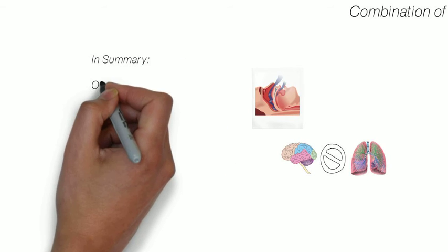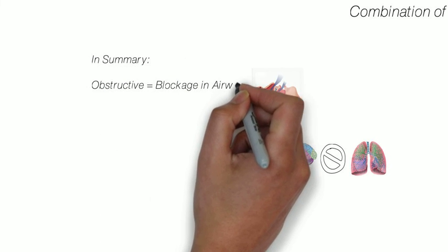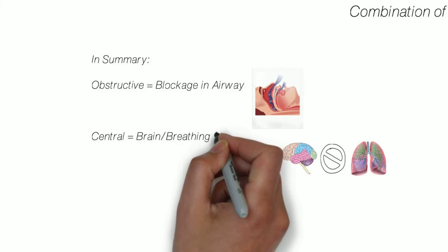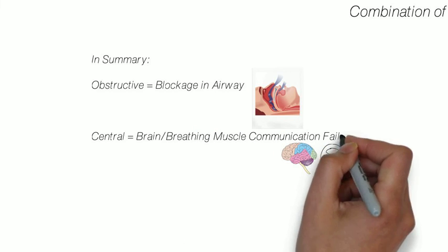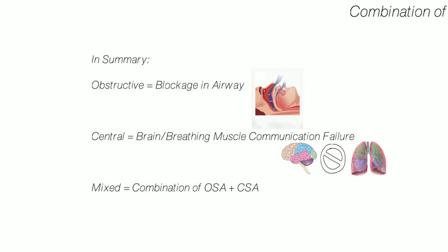In summary: obstructive sleep apnea is just a blockage. Central sleep apnea is poor brain-to-breathing-muscle communication. And mixed sleep apnea is a combination of both.